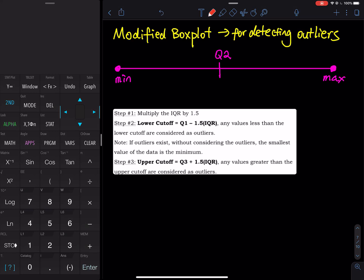In this video, we are going to discuss modified boxplot. So what's the difference between a modified boxplot and a regular boxplot? The regular boxplot doesn't detect any outliers for you.